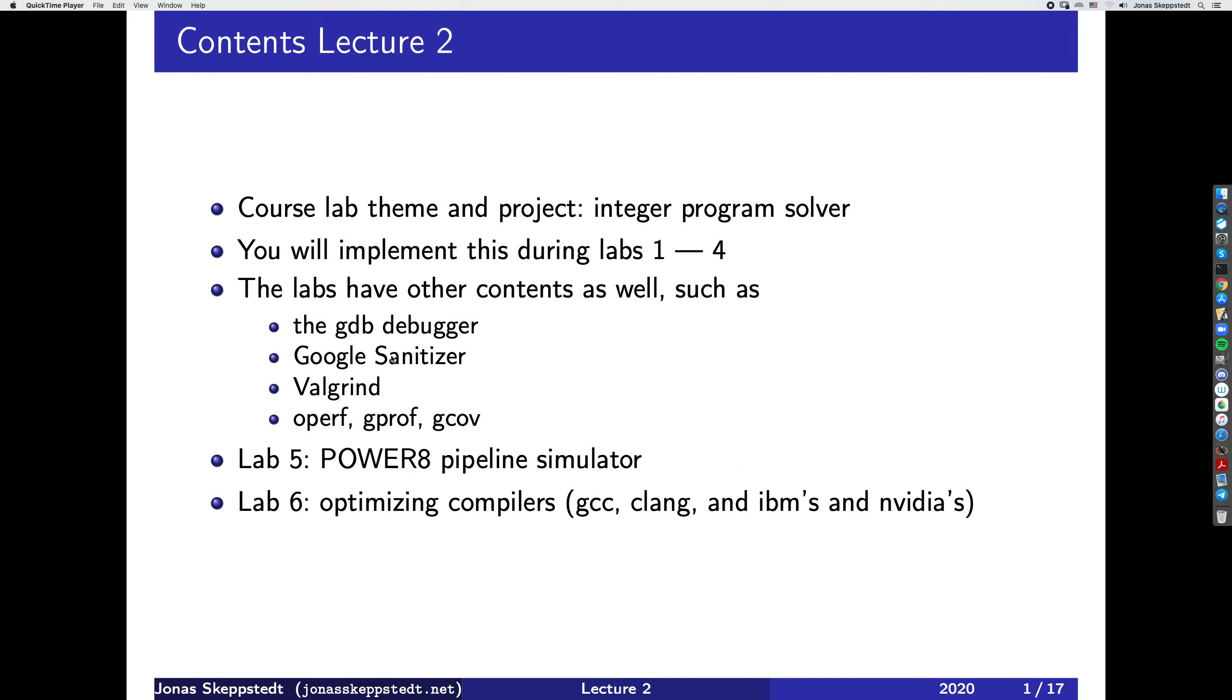For instance, debugger, Google Sanitizer, and Valgrind are for detecting memory errors. The others here are for performance measurements and also checking that all lines of the code of your program have been executed. That's the gcov - cov is for coverage.